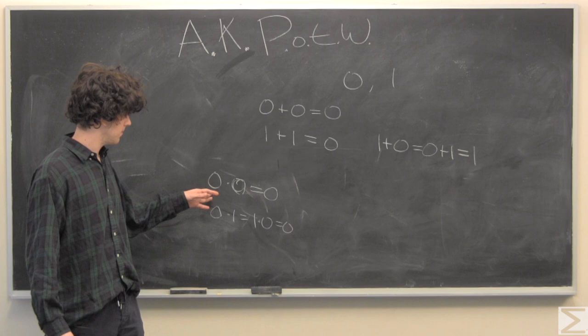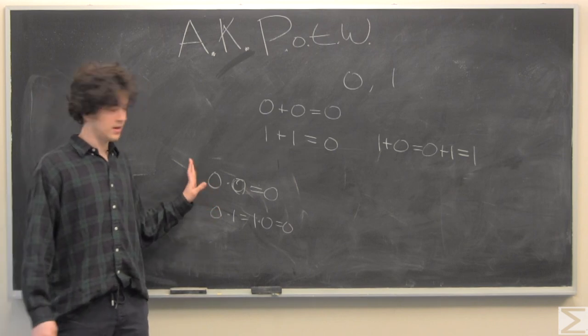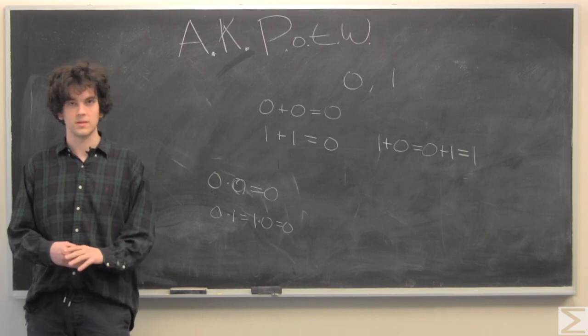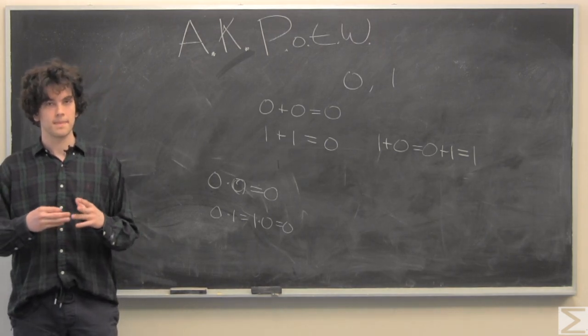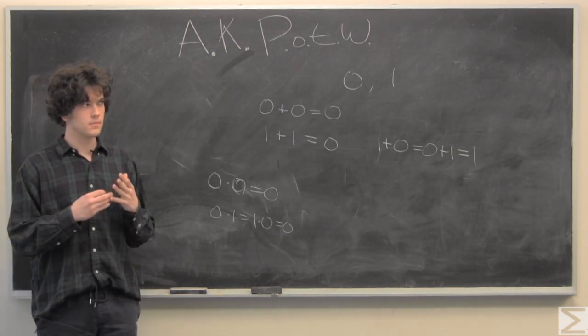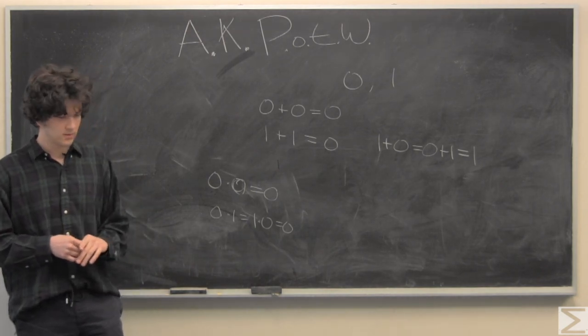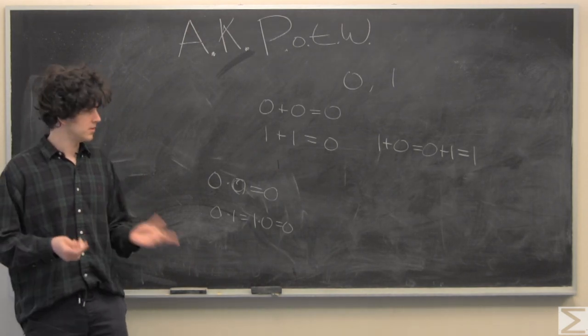And I believe I made a mistake. This 0 times 0 is actually its multiplicative inverse. And now we just need our multiplicative identity for 1.